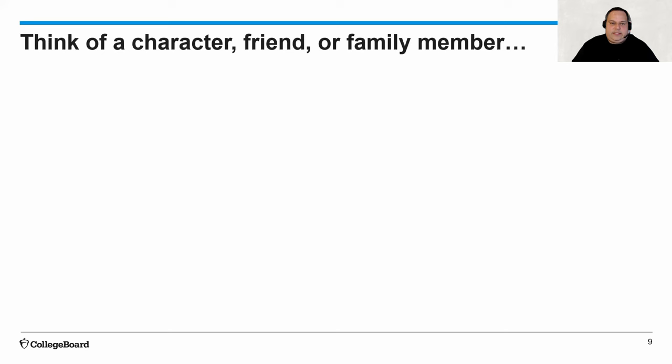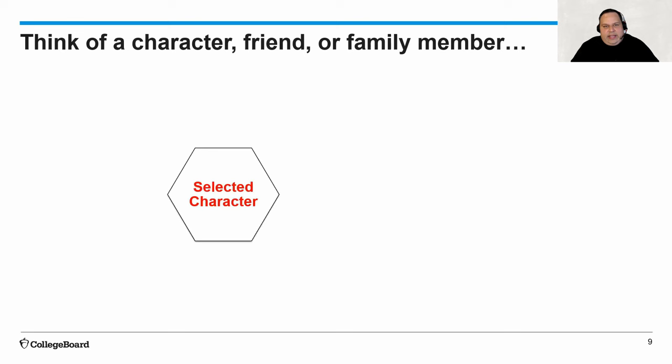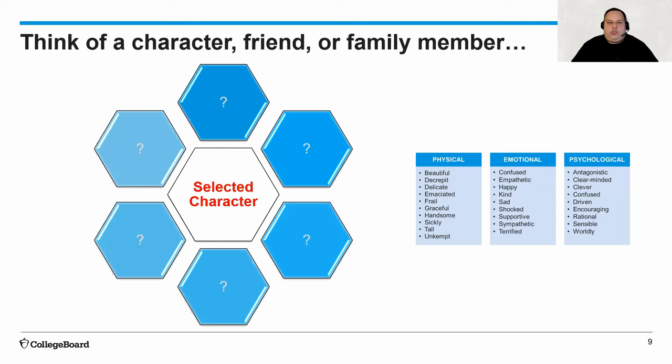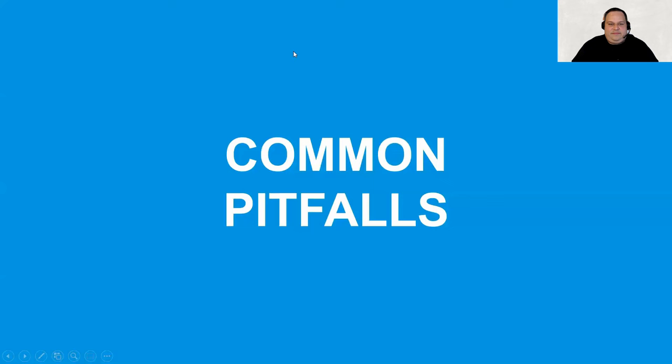Let's practice. I'm going to encourage you to think of a friend or a family member right now because you know those people best. Go ahead and write that person's name down — I'm going to give you a cheat sheet with the words from the previous slide — and I want you to take some time. You can pause this video and populate different adjectives surrounding this character so that you can share a full composite with your teacher or your friends. Once you're done, unpause the video and we'll continue.